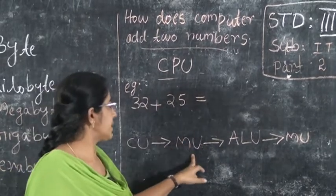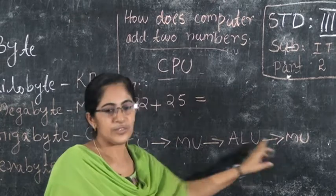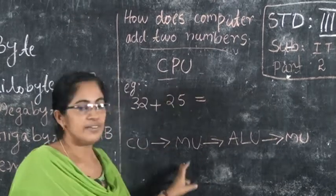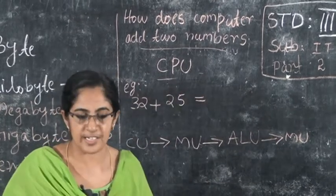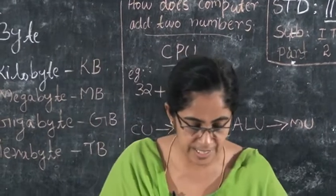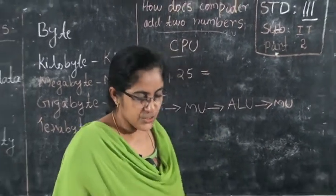The CPU components are: control unit, memory unit, ALU and MU. These are the three parts of the CPU.